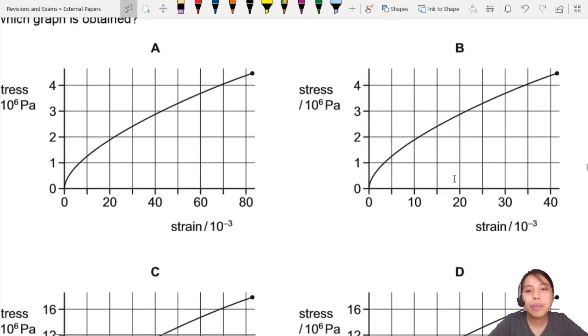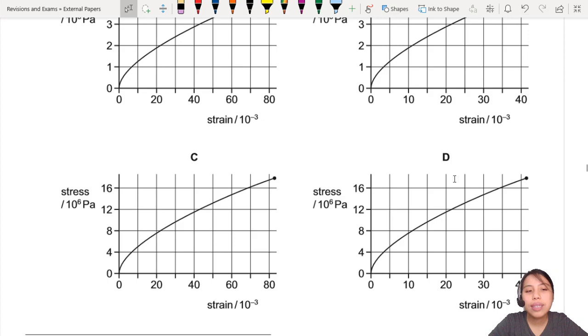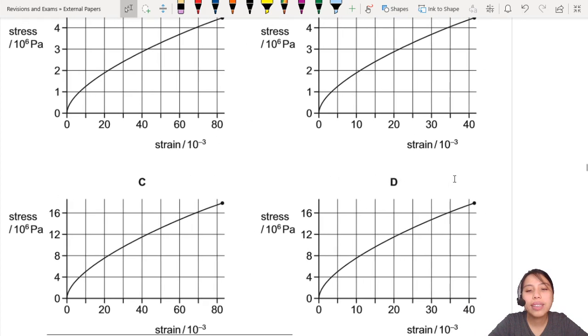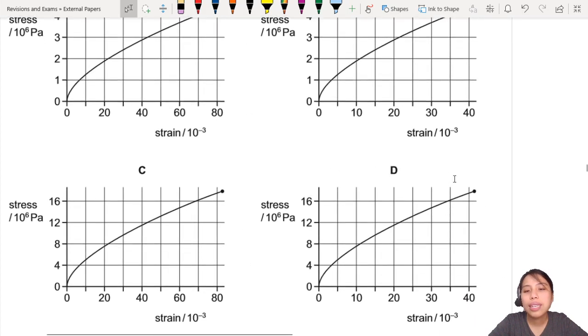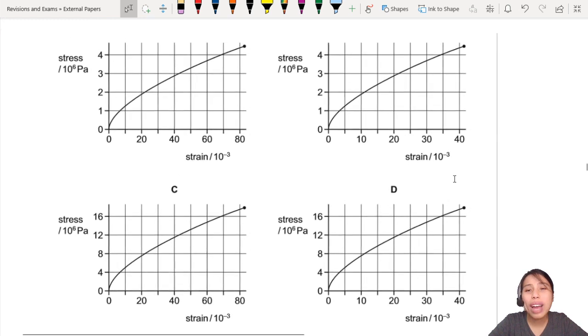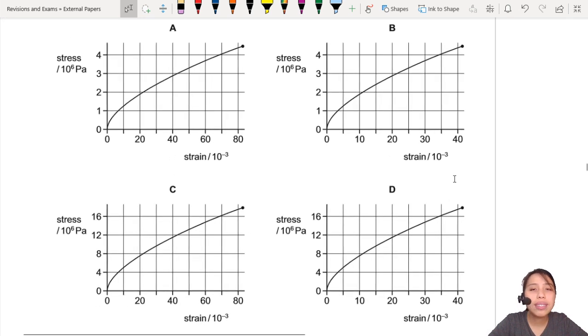This one, B is exactly the same as original. C is, Y axis, X axis is different. D, the Y axis has changed. So actually, if you have the same exact Young's modulus ratio, you should have the same graph. You should have the same graph.